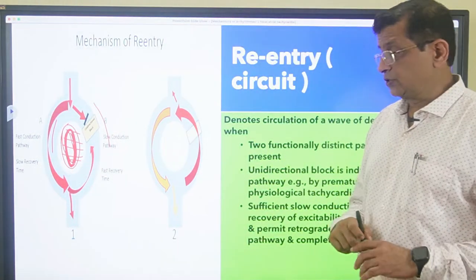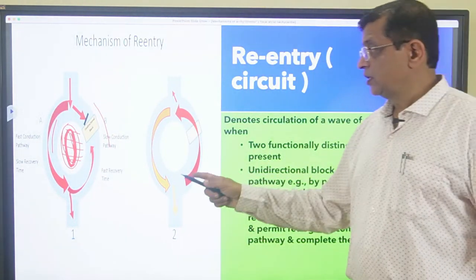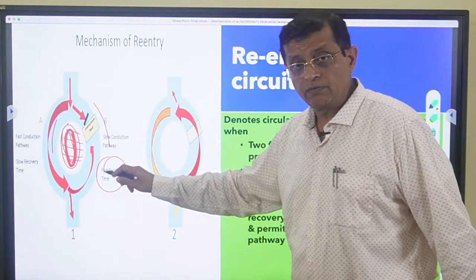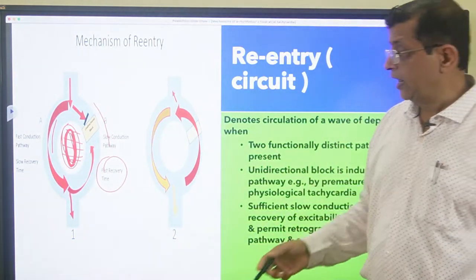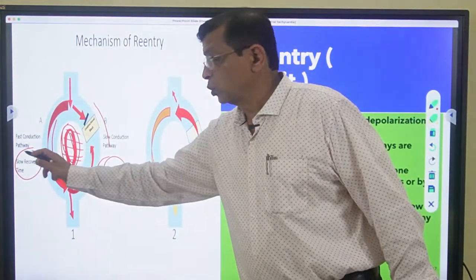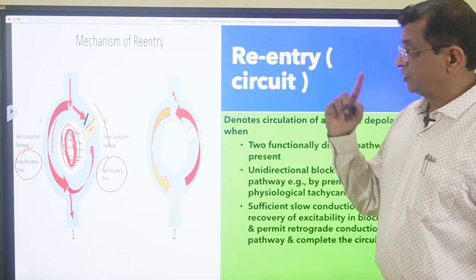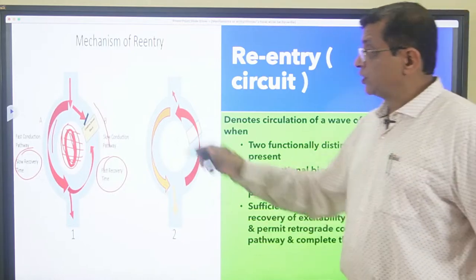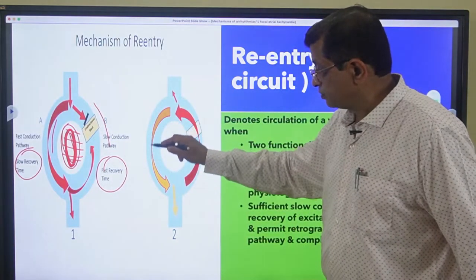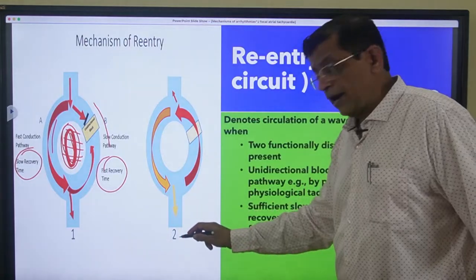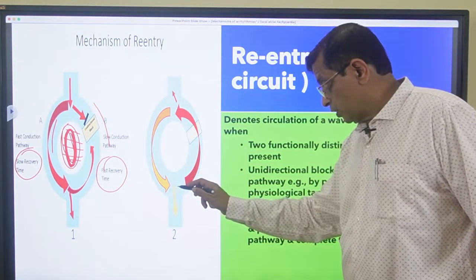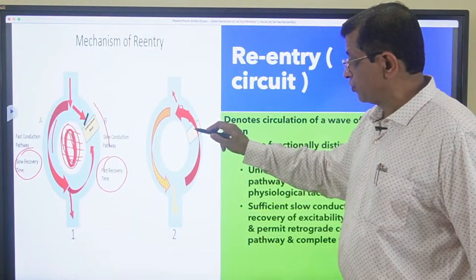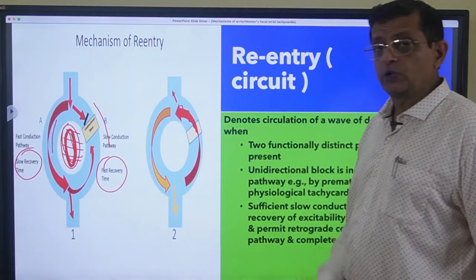There is another requisite: the slow pathway has a faster recovery time because there is a lot of time for recovery, and the fast pathway has a slower recovery time. Even if these requisites have been met, if the current comes normally it will go through the fast pathway and go ahead. At the same time it will come back retrogradely, and by the time it arrives, the current from the slow pathway will reach and both will cancel each other.